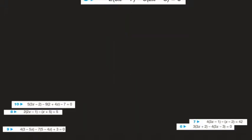We're going to try the same equation again, except we're going to multiply through instead. 2 times 5x is 10x, 2 times minus 7 is minus 14, minus 6 times 2 is minus 12x, minus 6 times minus 3 is positive 18 — minus times minus is plus — and that equals 0.